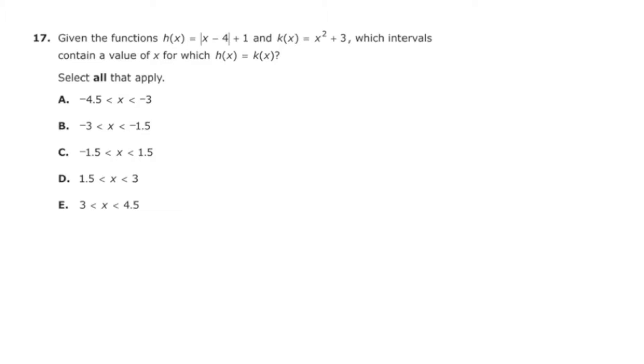Hey there, this is MathCamp321 presenting the solution to question number 17 from the PARC Algebra 2 practice test. This question states that given the functions h of x equals the absolute value of x minus 4 plus 1 and k of x equals x squared plus 3, which intervals contain a value of x for which these two functions are equal, select all that apply.